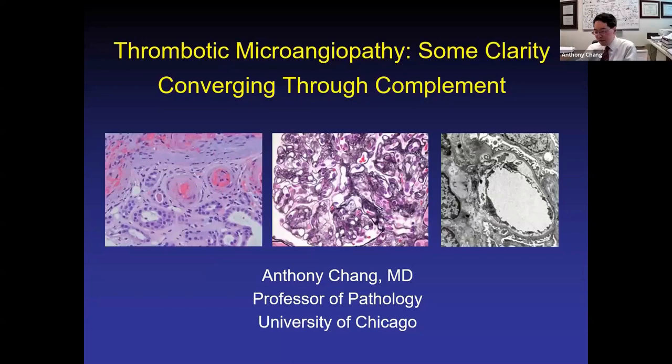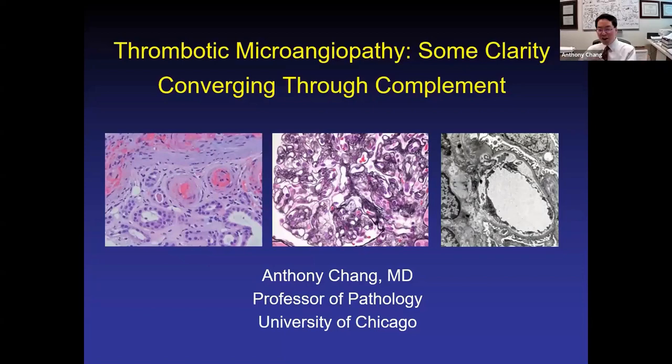We're going to talk about thrombotic microangiopathy, which really has been a frustrating topic for probably most people. For the pathologists, it's mostly straightforward to make that diagnosis, but we've traditionally just kicked it back to the clinicians to say it's your problem — you figure out if it's TTP or HUS or malignant hypertension or scleroderma renal crisis, antiphospholipid antibody syndrome. The list goes on and on, and it requires a lot of clinical correlation.